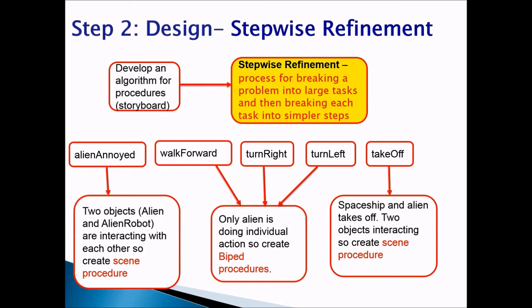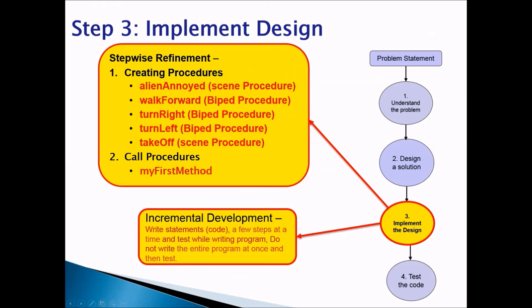The last one is take off. For take off, the alien goes to the spaceship and they both take off, so two objects are interacting with each other. We're going to create a scene procedure for take off.